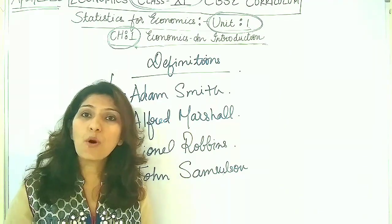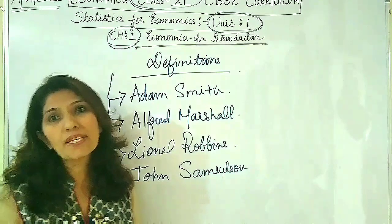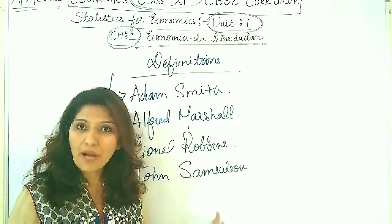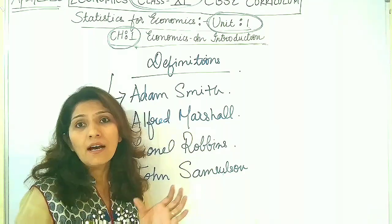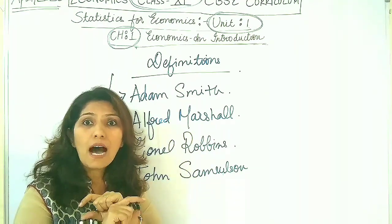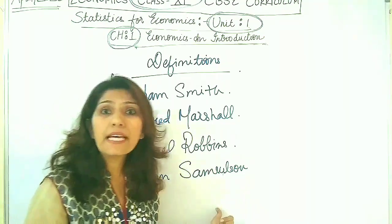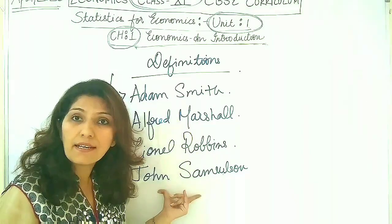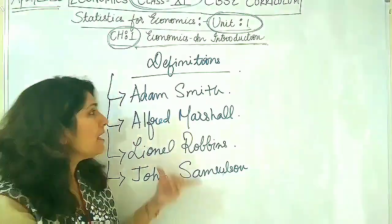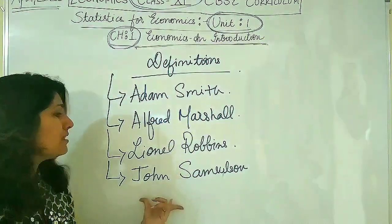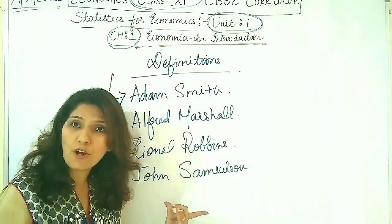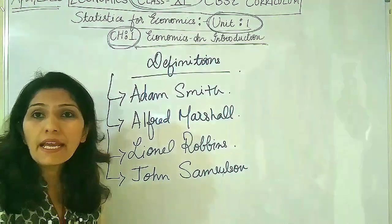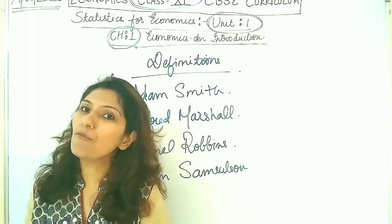John Samuelson was the first American economist who won the Nobel Prize in economics in the year 1970. He died in the year 2009. He also received the highest award in science given by America in the year 1996 by Bill Clinton. John Samuelson is regarded as the father of modern economics. If Adam Smith is regarded as the father of economics, John Samuelson is regarded as the father of modern economics.